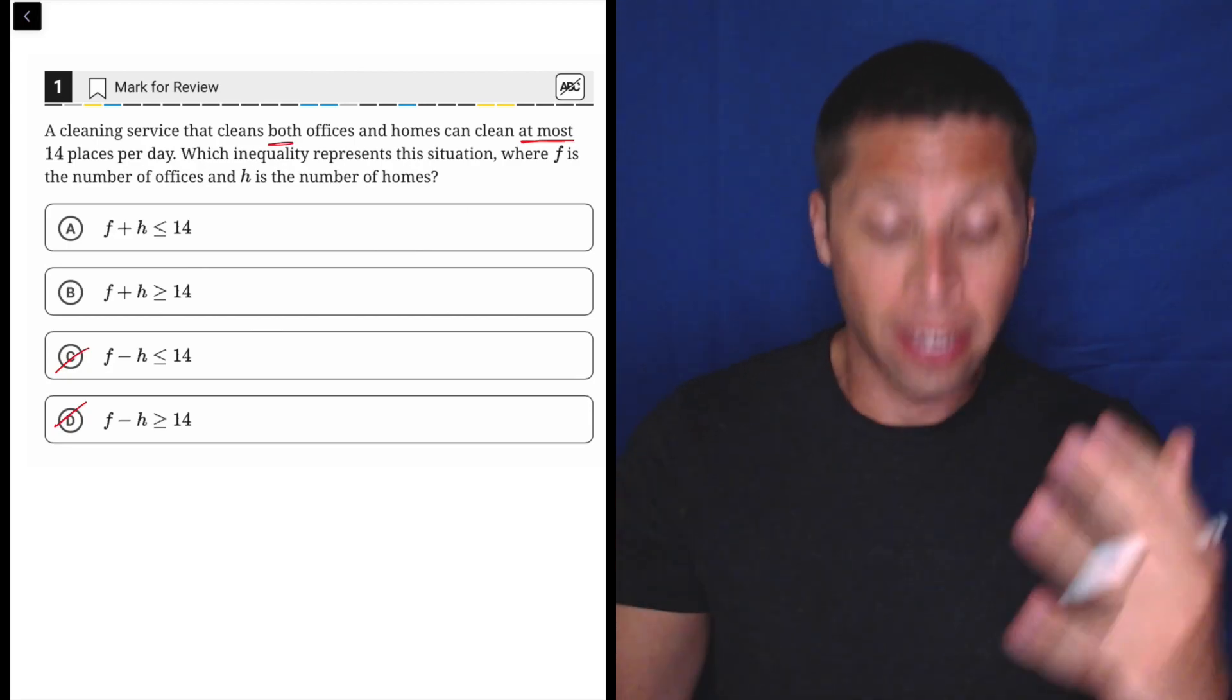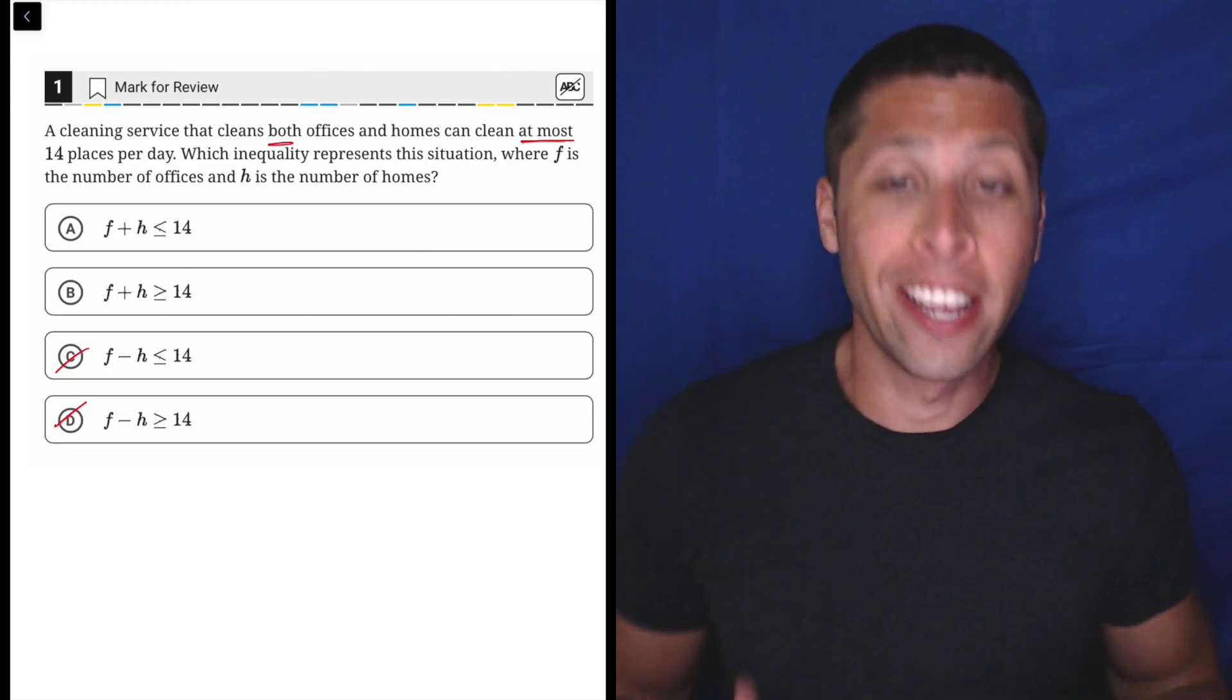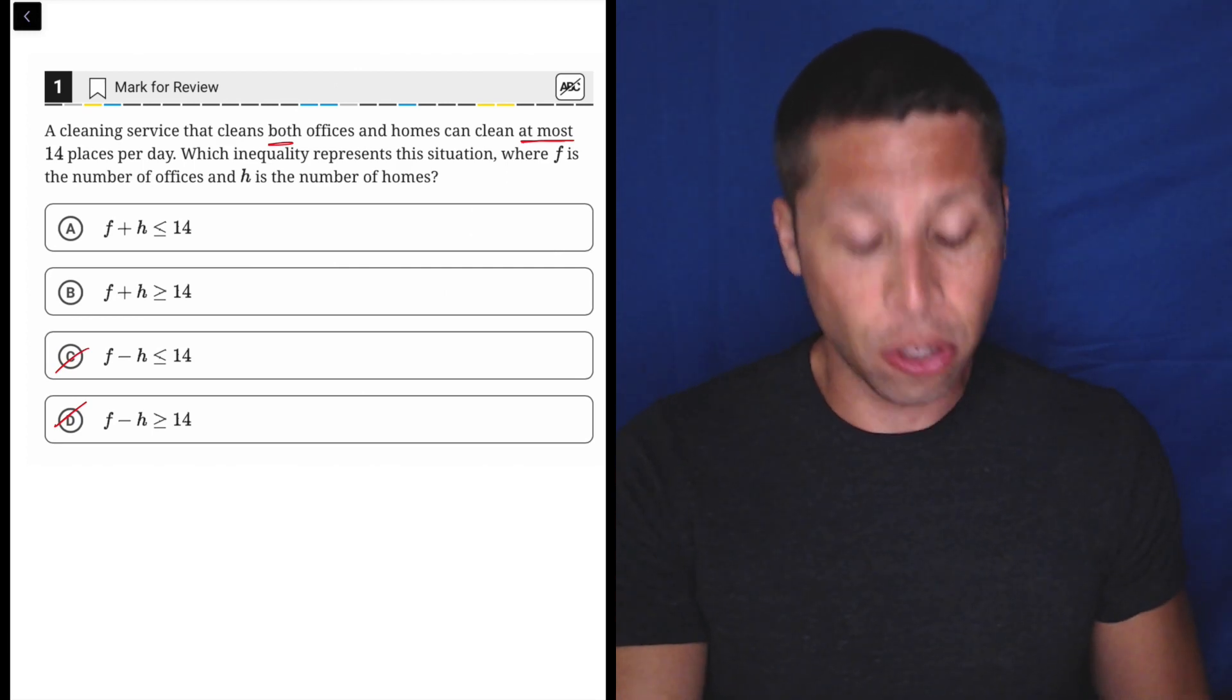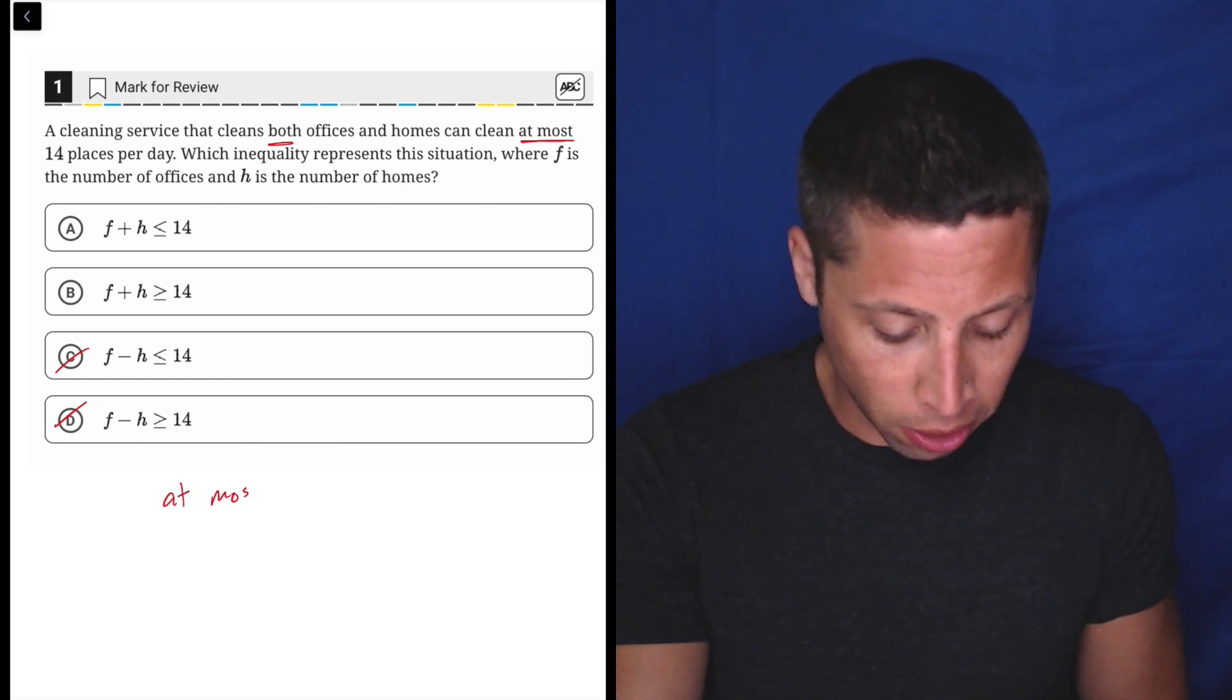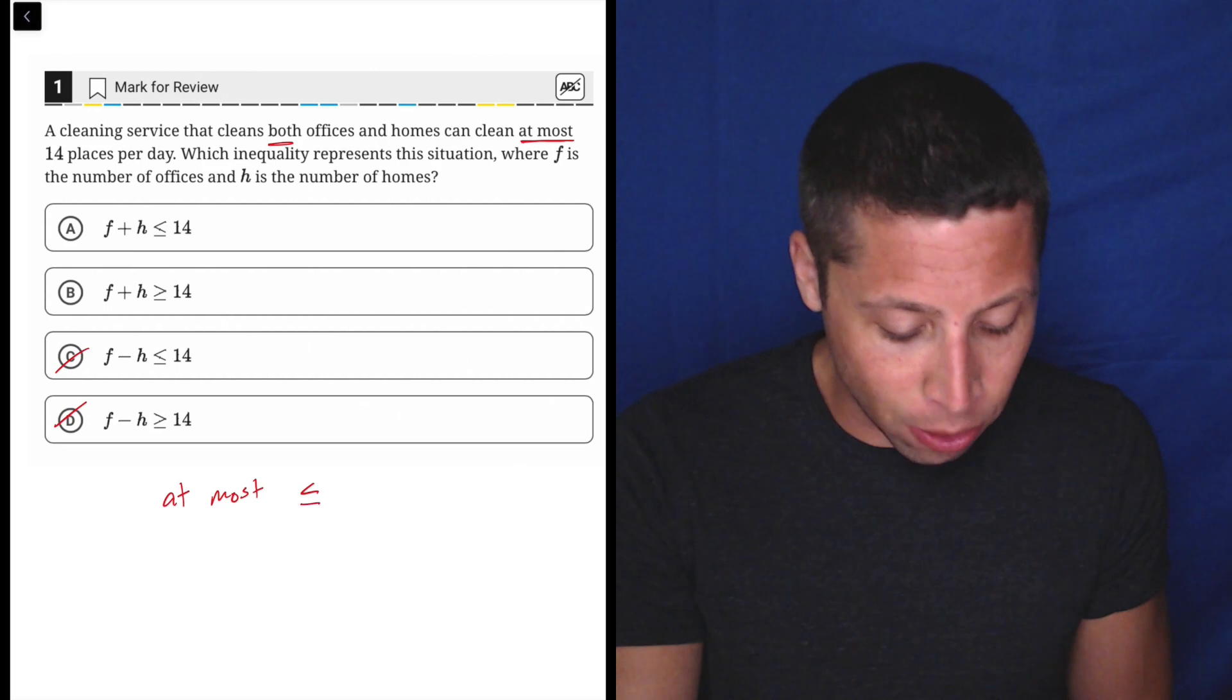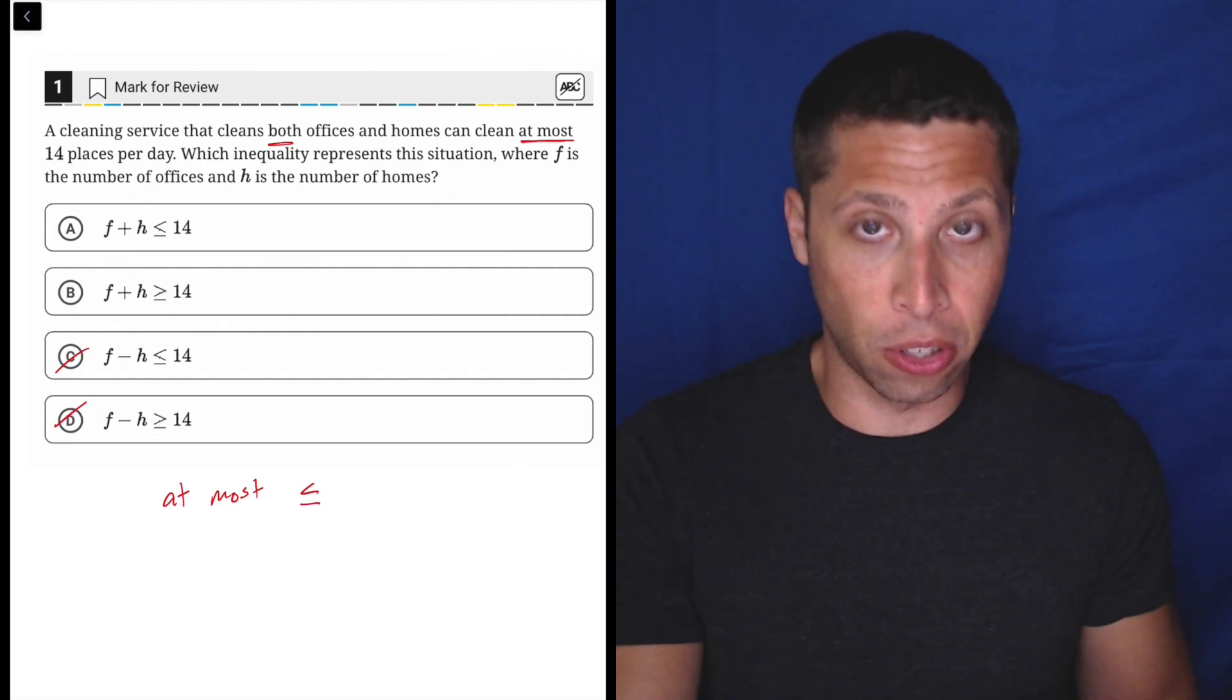So we don't know the numbers, but together, as an addition, they should be, in this case, at most 14. And so we need to know that at most is going to mean that we have less than or equal to whatever our result is. So this can get twisted, right?